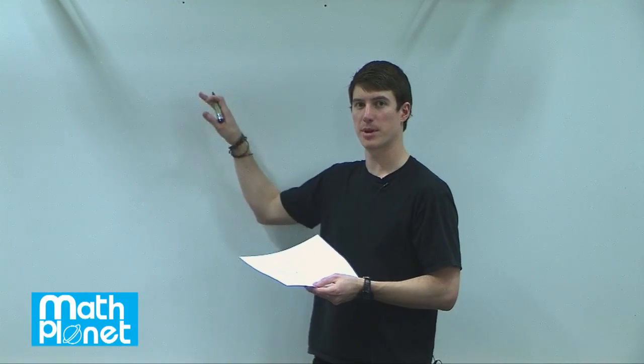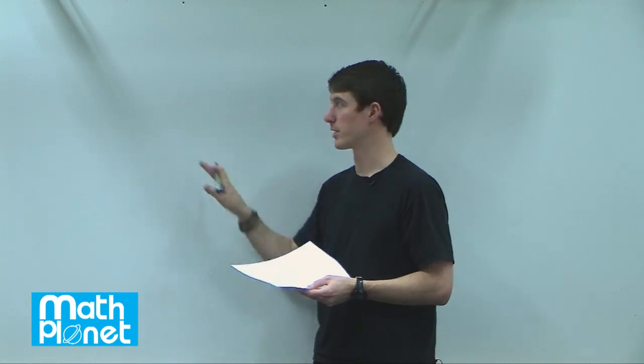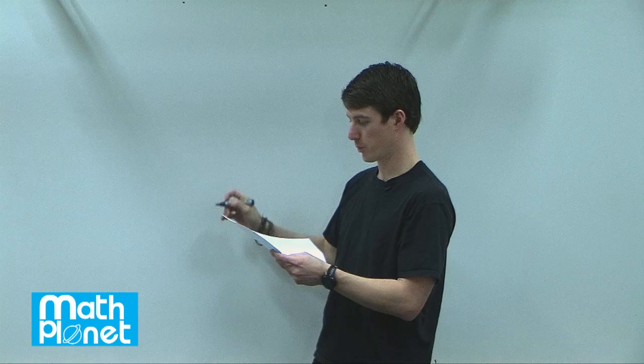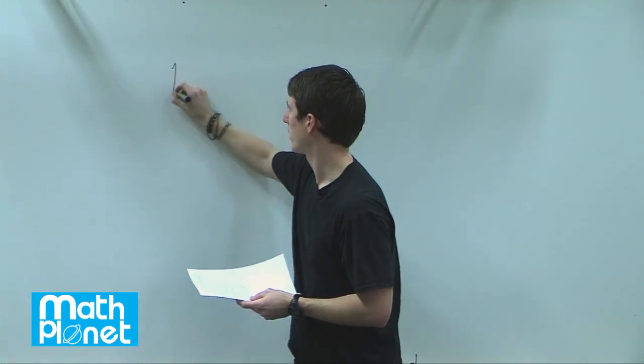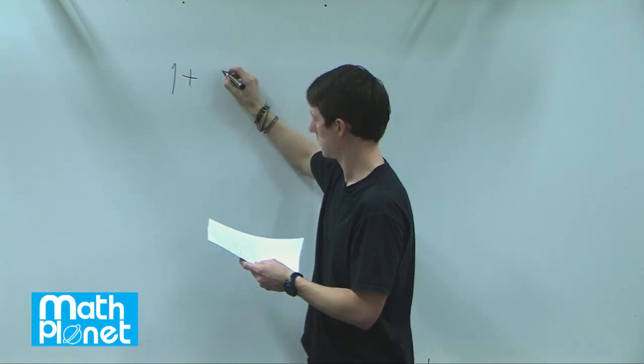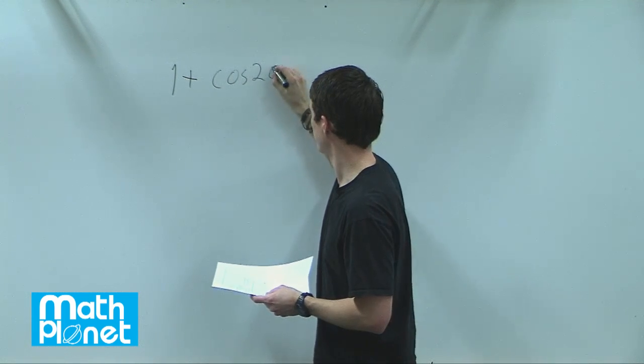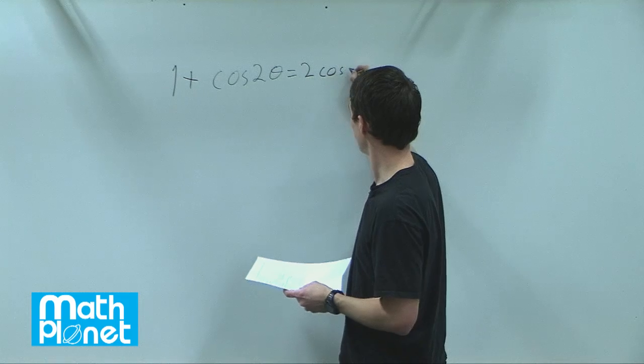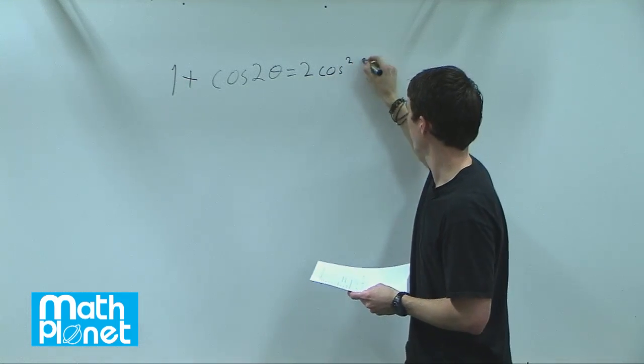So here we have a simple trigonometric proof. Let's manipulate either side of the equation and see if we can get one side equal to the other. What we are given is 1 plus cosine 2 theta equals 2 cosine squared theta.